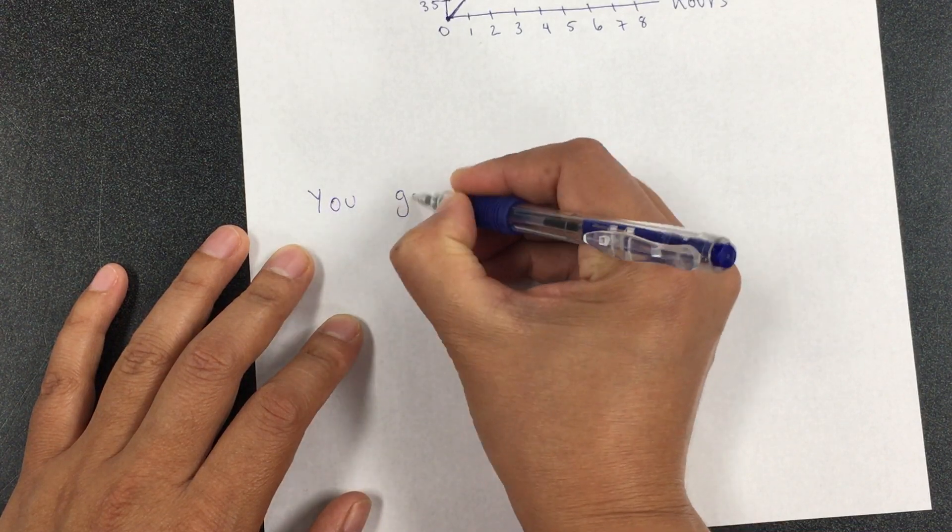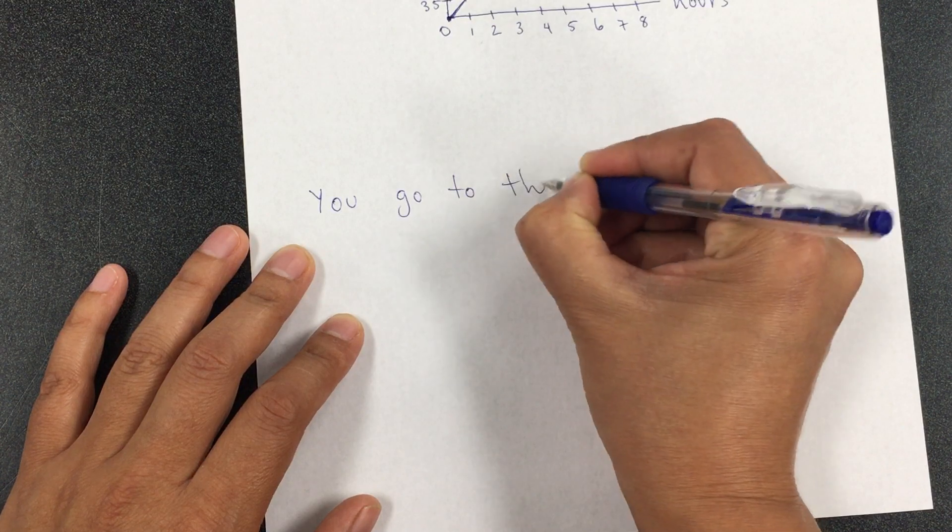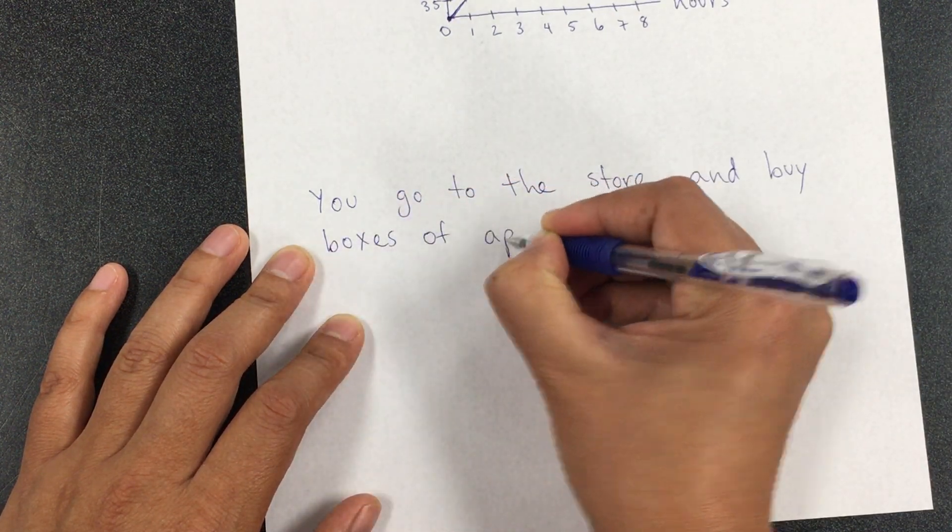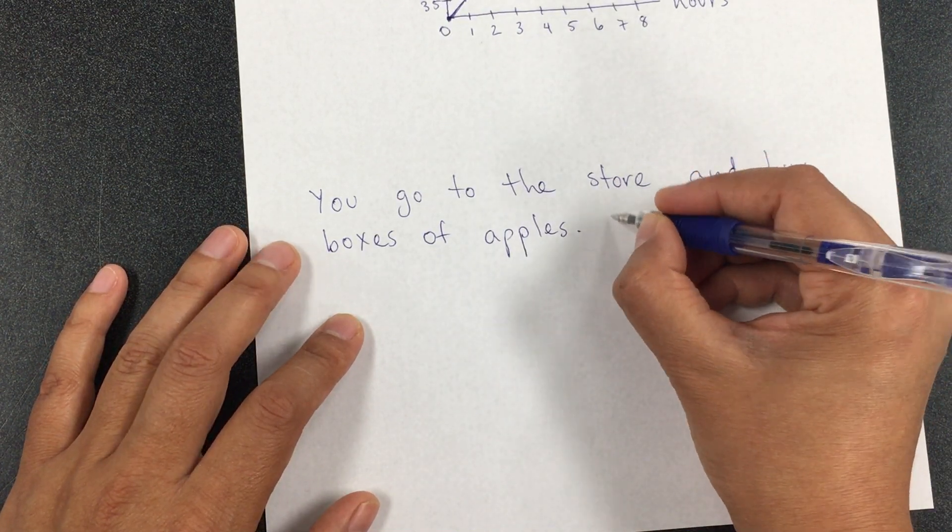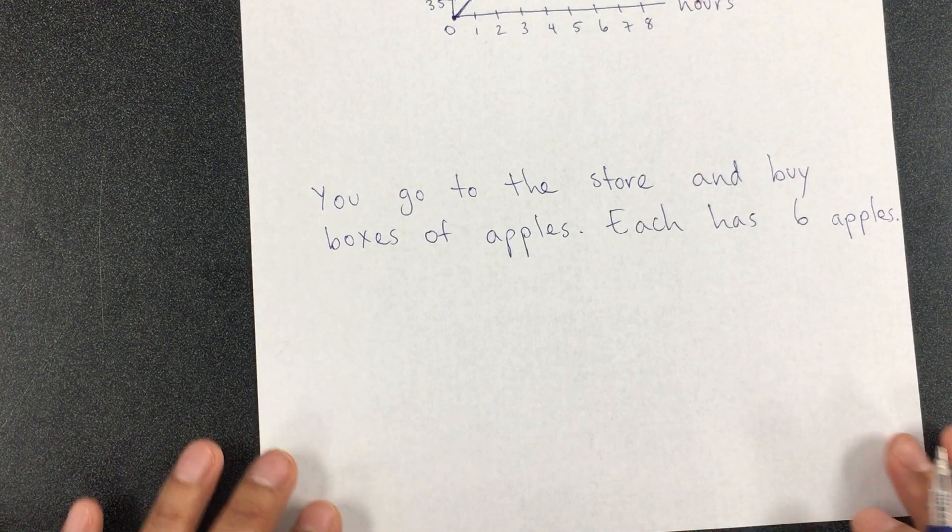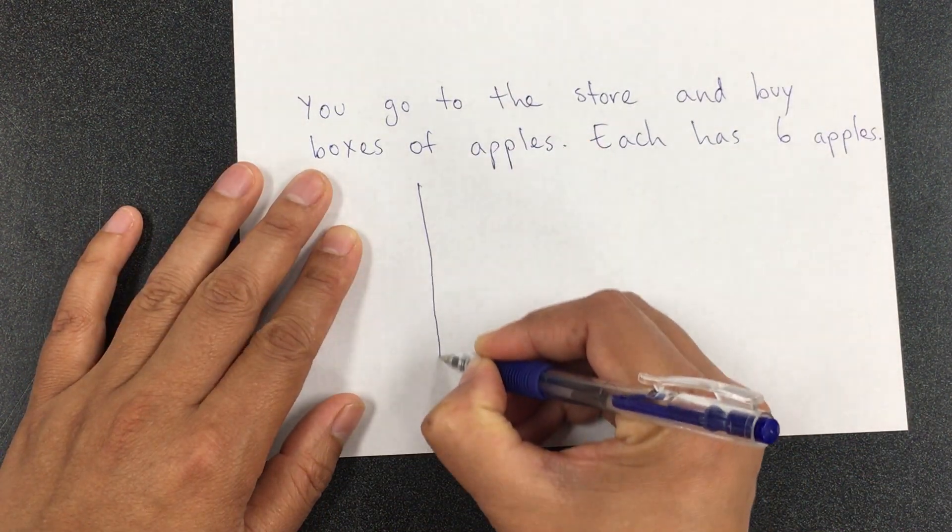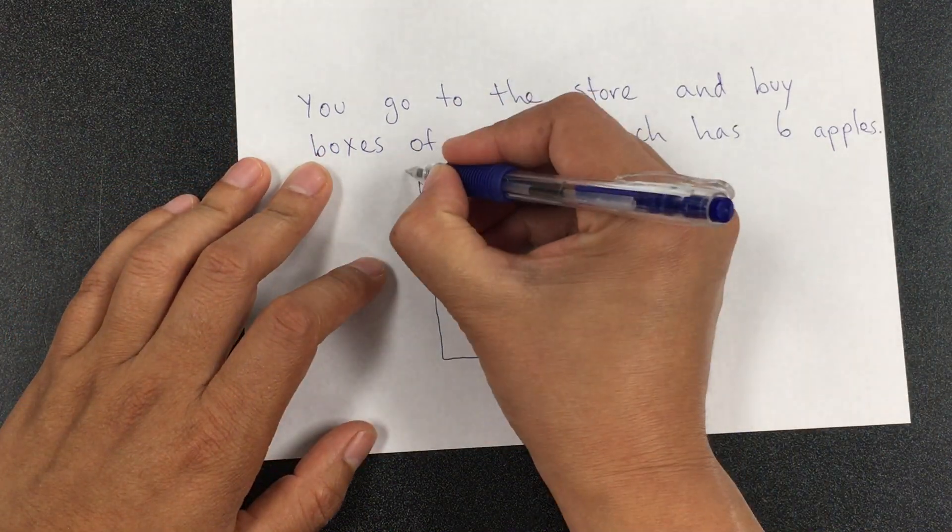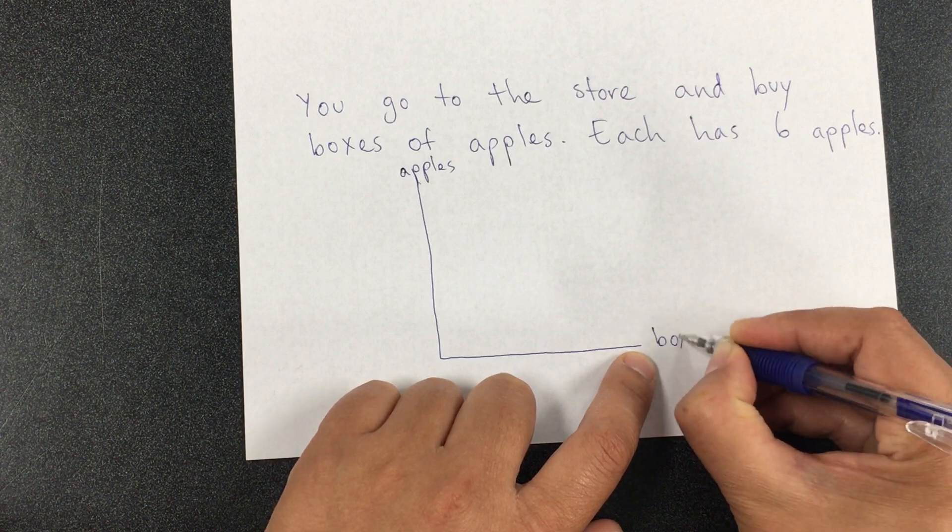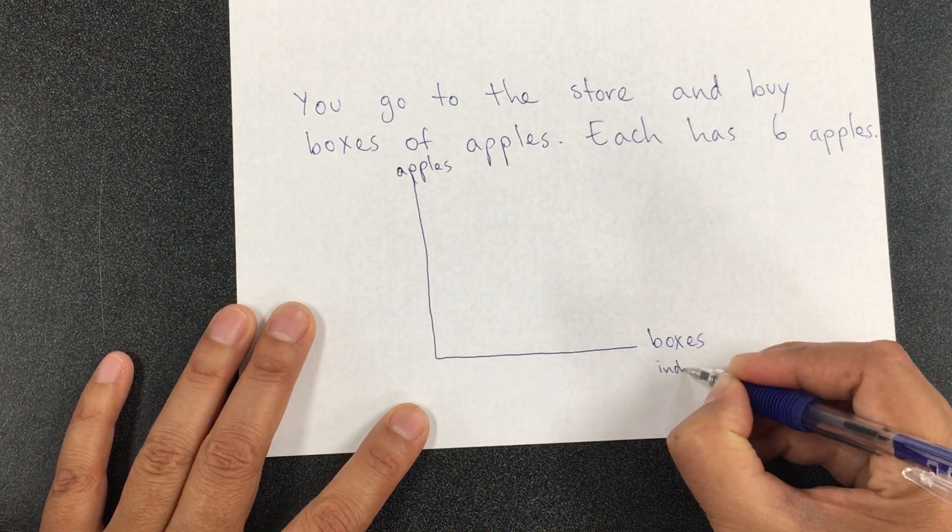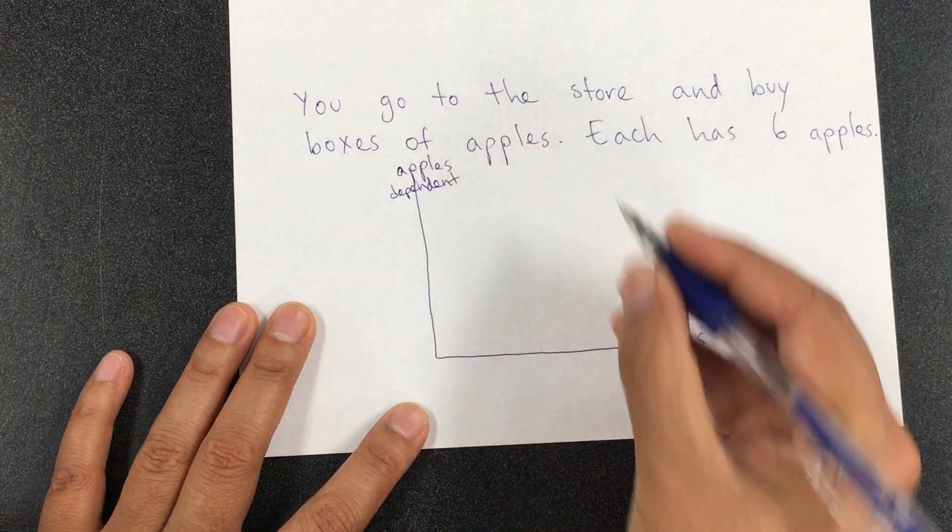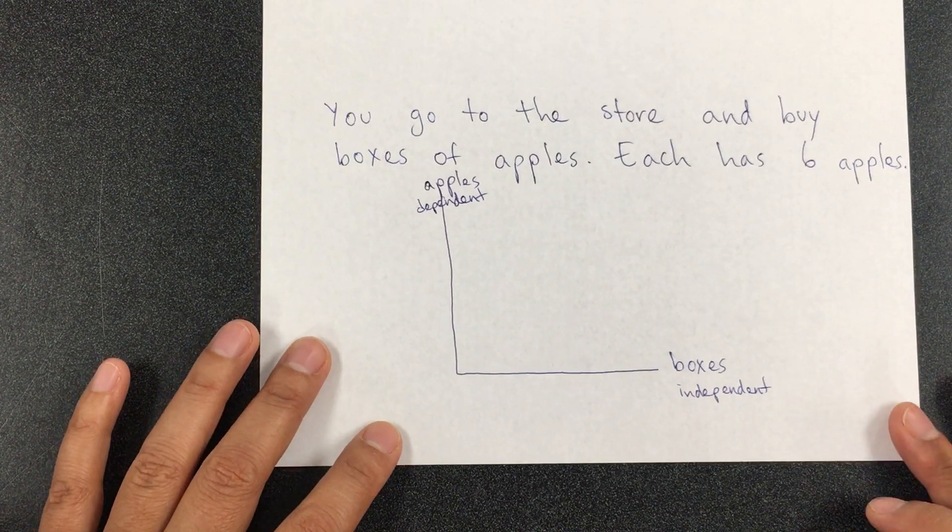It says, you go to the store and buy boxes of apples. How would the graph for that look? On the y-axis, we're going to put the total number of apples. How many apples you have depend on the number of boxes that you buy. This is independent and the apples are dependent. The apples that you have depend on how many boxes you buy.